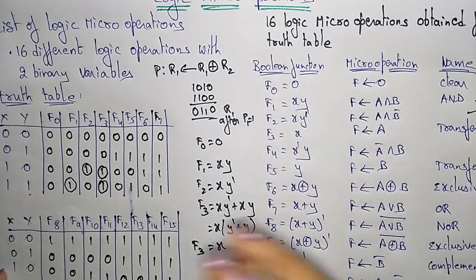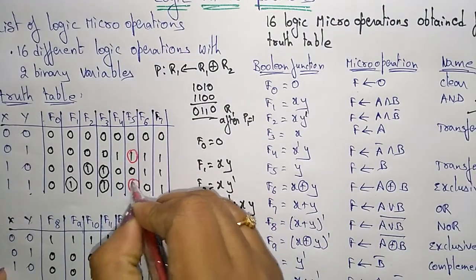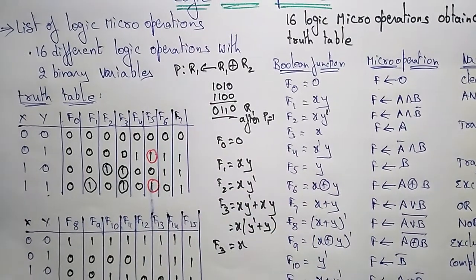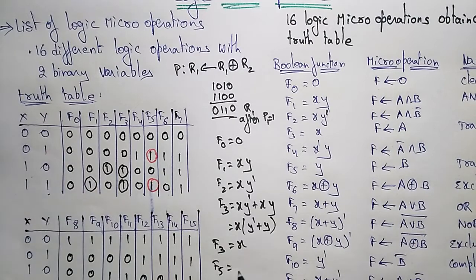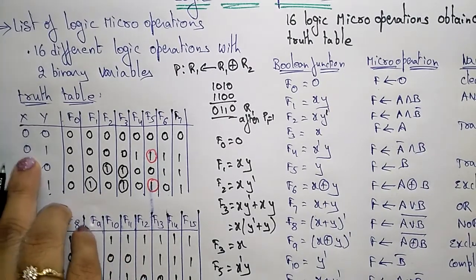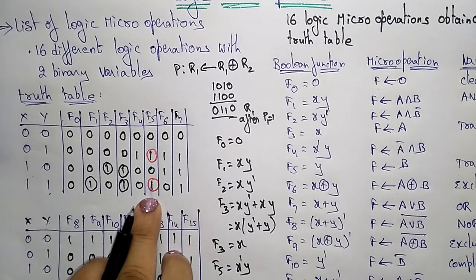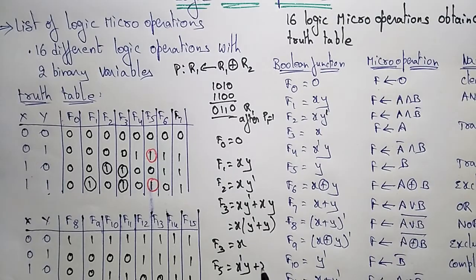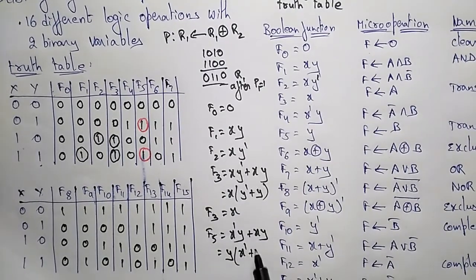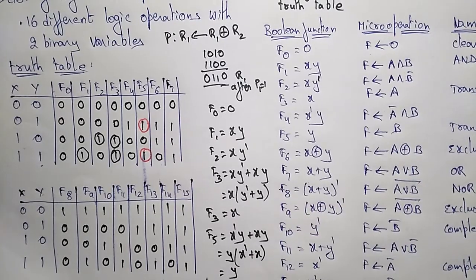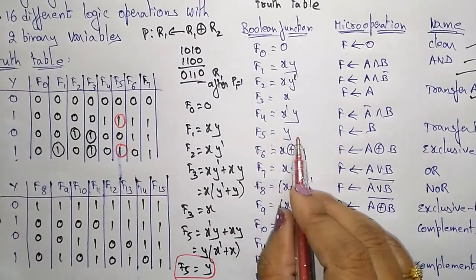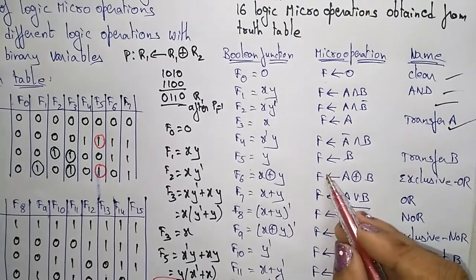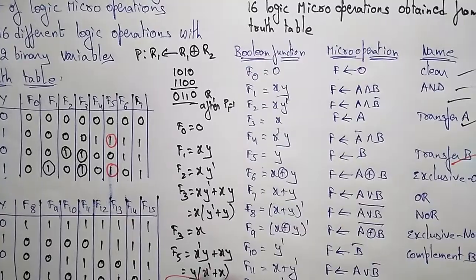For F5, the 1 bits appear where X=0,Y=1 and where X=1,Y=1. So F5 = X'Y + XY. Taking Y as common: Y(X' + X) = Y times 1 = Y. So F5 = Y, meaning the value of B is transferred to F. This is the Transfer B operation.